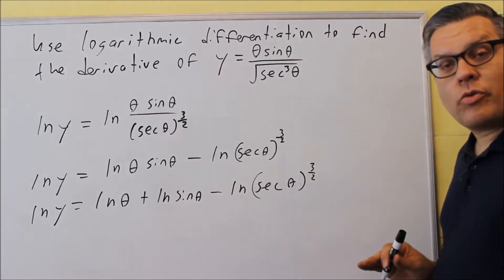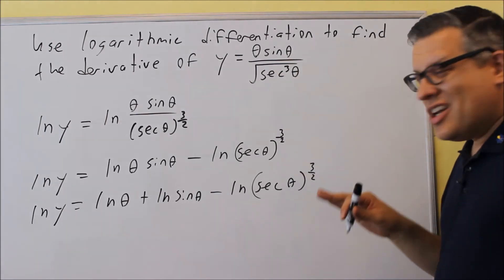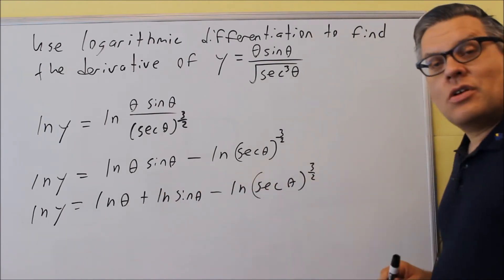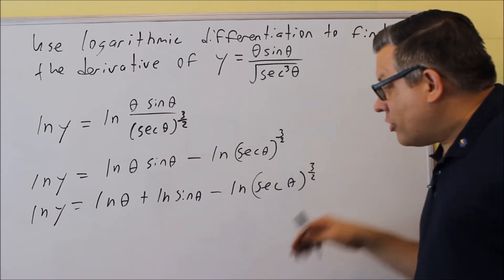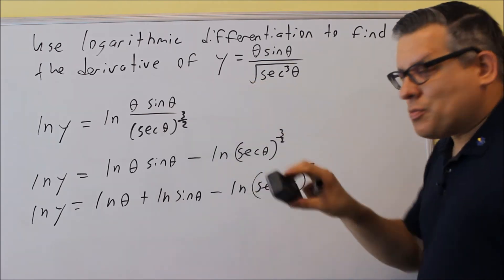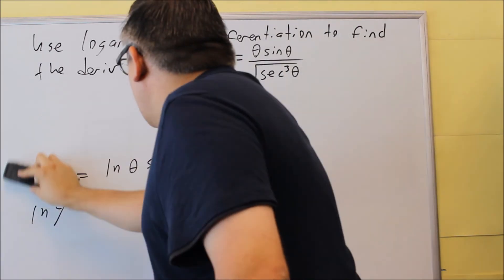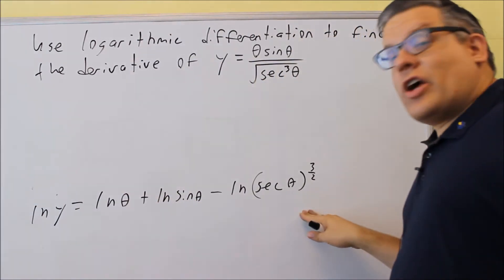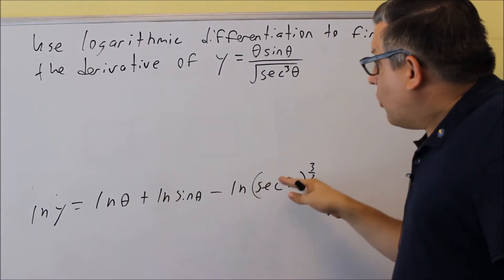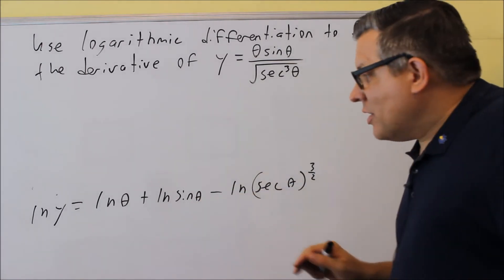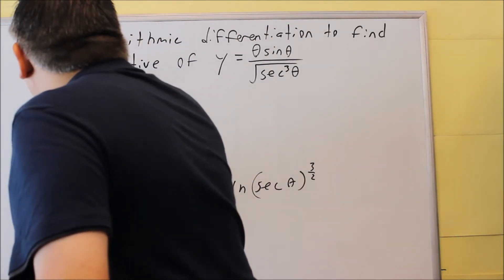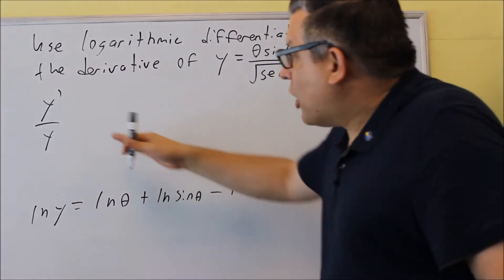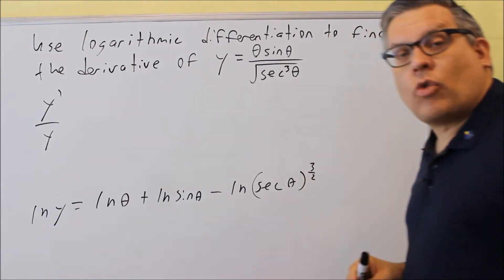Now that everything is broken up using log properties, we're ready to take the derivative. The whole reason for breaking it up is that we can now differentiate each term separately. On the left-hand side, we apply the U-prime over U formula with Y, giving us Y-prime over Y.